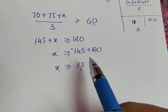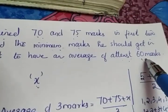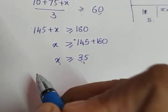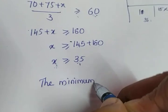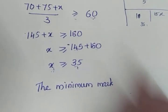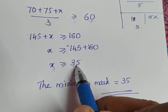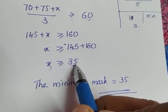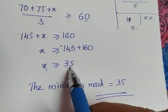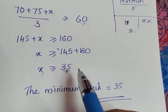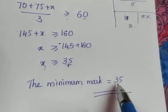If Ravi is scoring marks greater than or equal to 35 in the third test, he will get an average of at least 60 marks. The minimum mark required is the least value x can take, which is 35. So the minimum mark Ravi should score in the third test is 35. If he gets 36 or 70, the average will still be more than 60. The question asks for the minimum mark, and that is why the answer is 35.